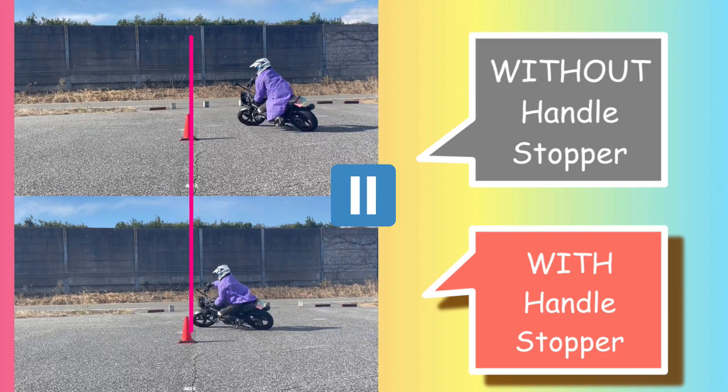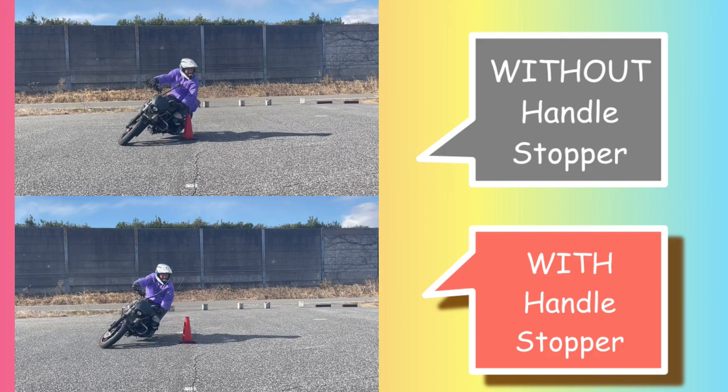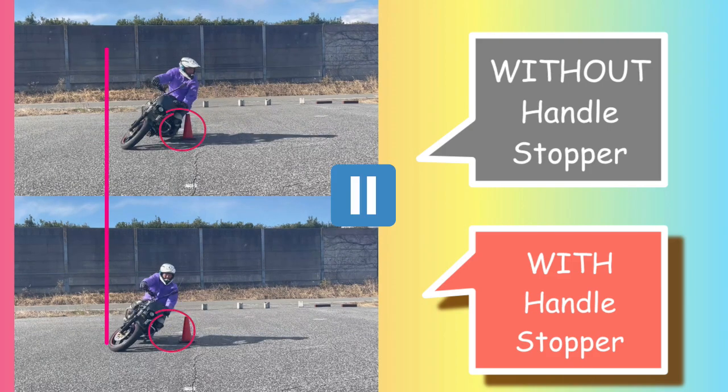I can say he is reaching the cone faster with the handle stopper. See, still, in terms of the size of the turning radius, without it has an advantage. I mean he is turning smaller.